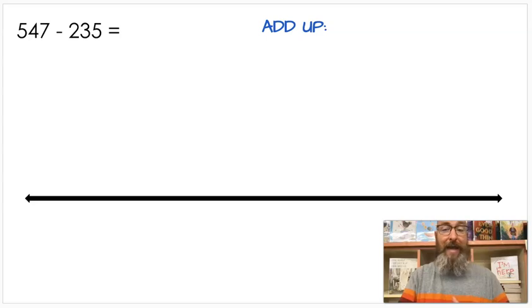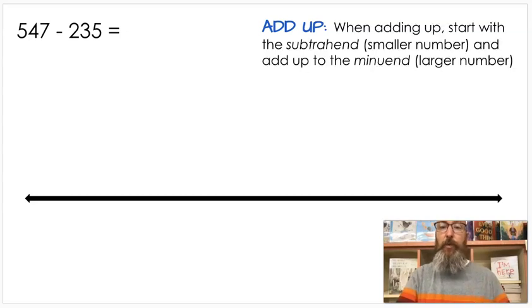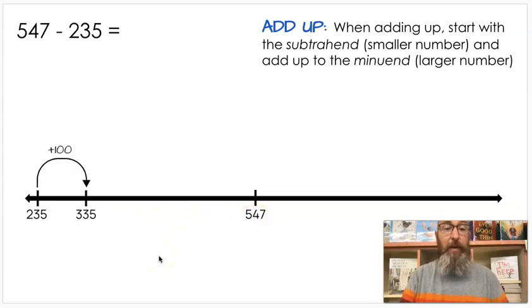Now let's get started. The first thing we're going to do is add up. We're going to do two adding up, two counting back. So I want to show you both ways so that you understand how we're doing it in school. When you're adding up, you start with the subtrahend, the smaller number, and you add up to the minuend. Usually when we're dealing with numbers that are less than a thousand but are greater than hundreds, we're going to start with jumps of 100. I want to see how close I can get to this number without going over.